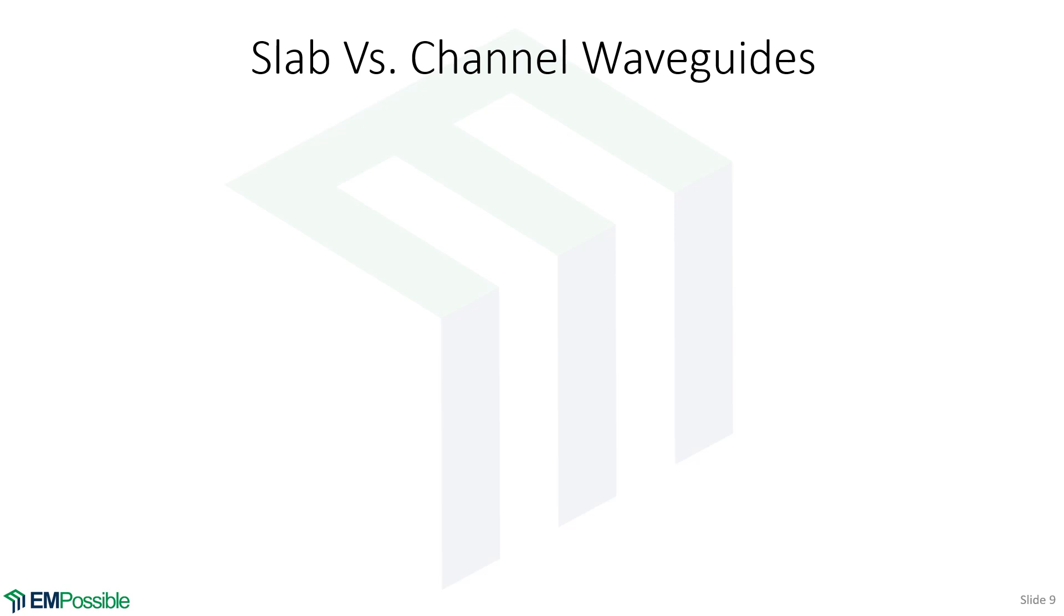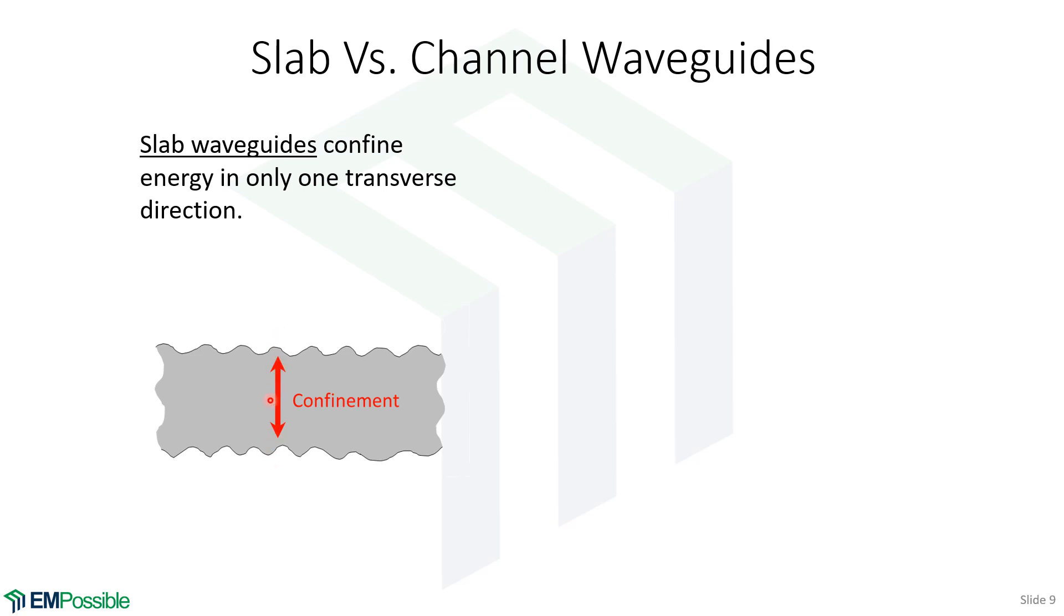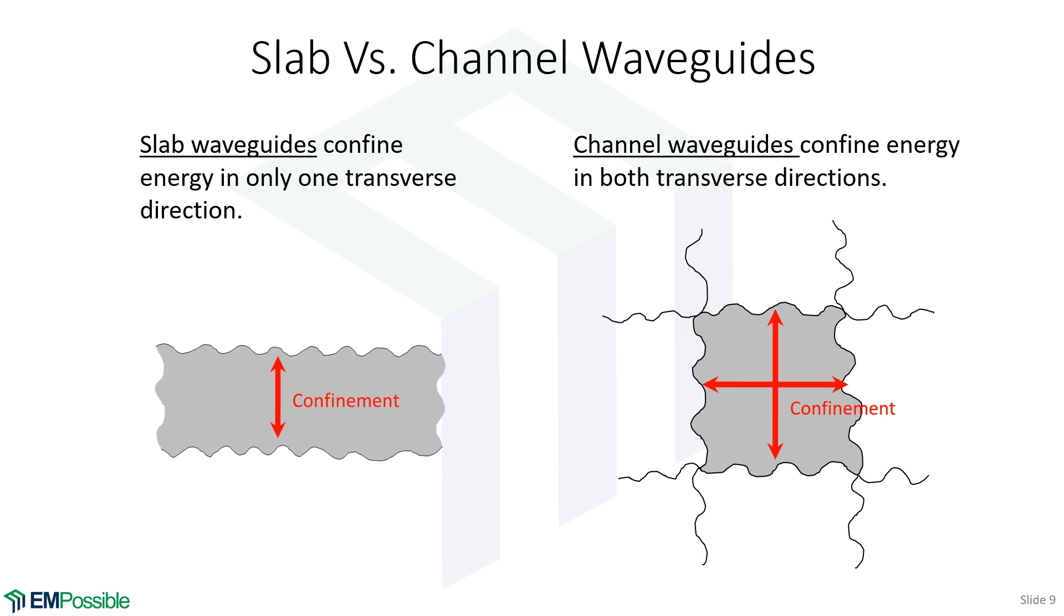Slab waveguides versus channel waveguides. Slab waveguides have confinement in only one direction. The waves are free to spread out in the other direction and also in and out of the screen. A channel waveguide has confinement not only in the original direction but also horizontally—confinement in two directions. The wave is still allowed to spread in and out of the screen. It's a pipe. Channel waveguides are pipes; slab waveguides are not because the wave is free to spread in this extra direction.